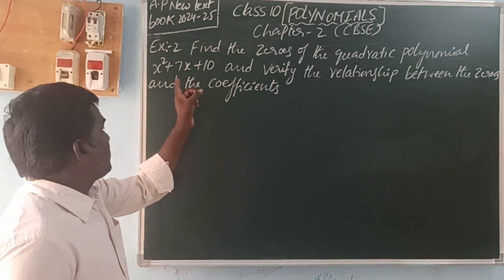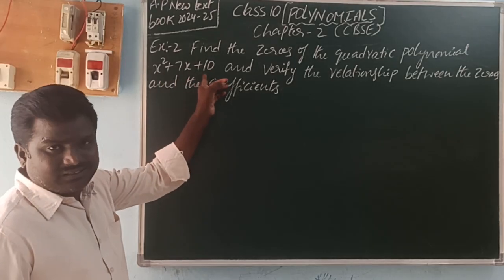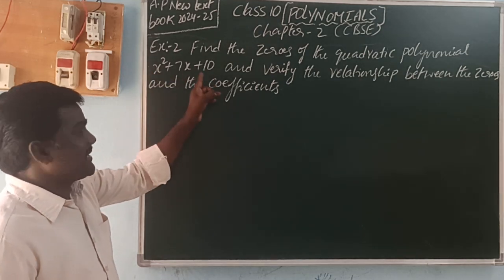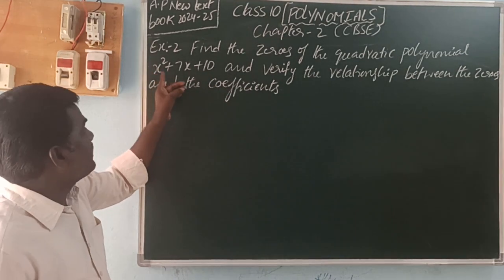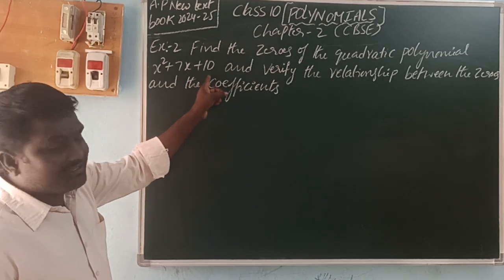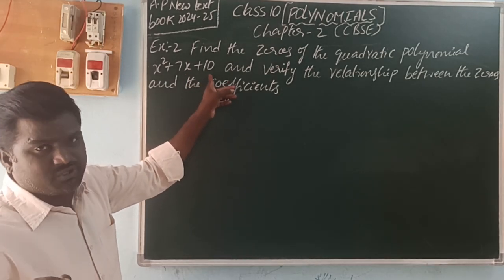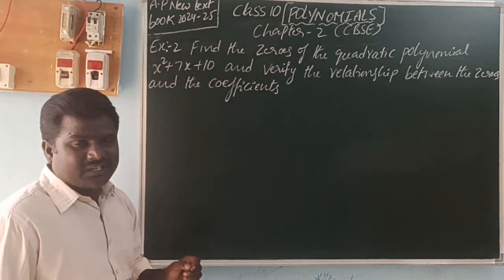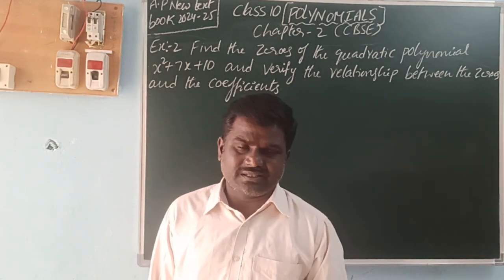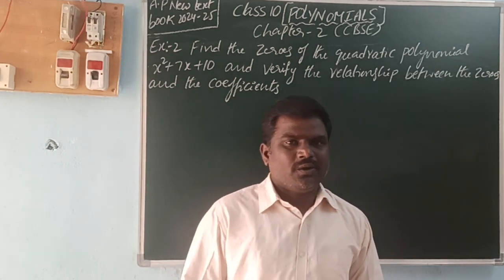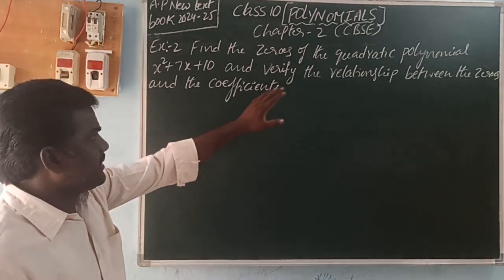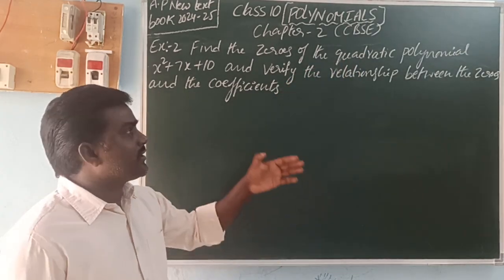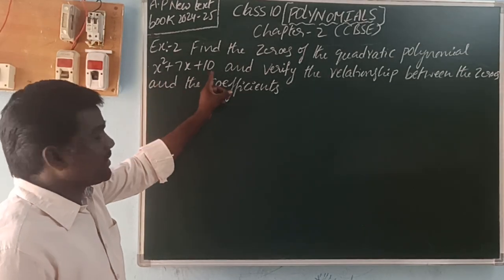Find the zeros of the quadratic polynomial. Polynomial means what? The degree of terms of algebraic expressions are non-negative integers. Here, x squared plus 7x plus 10 has 3 terms. The degrees of these terms are 2, 1, and 0 respectively. The degree of a constant term is 0. So the degrees are non-negative whole numbers — it is called a polynomial. Quadratic polynomial means a polynomial having degree 2.